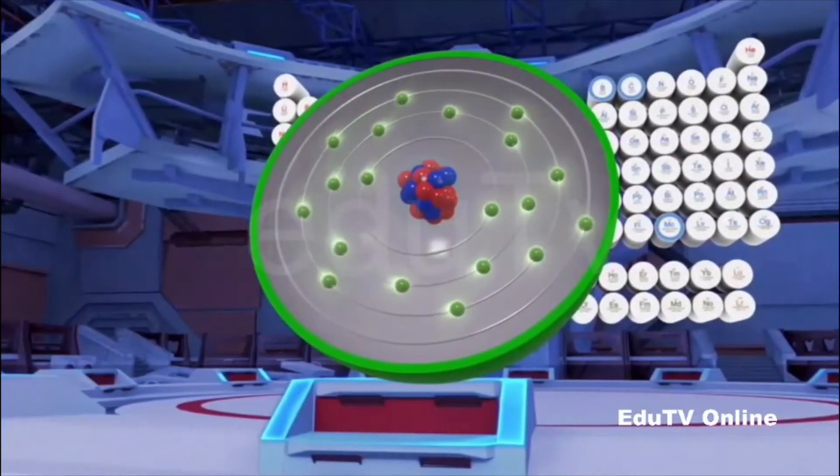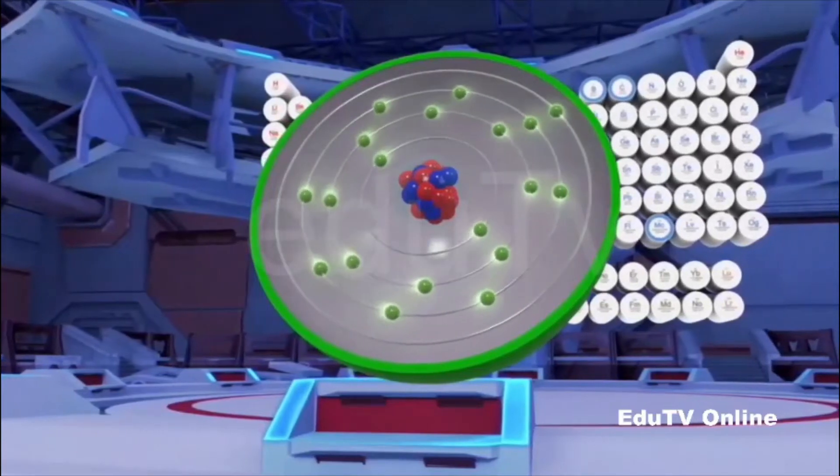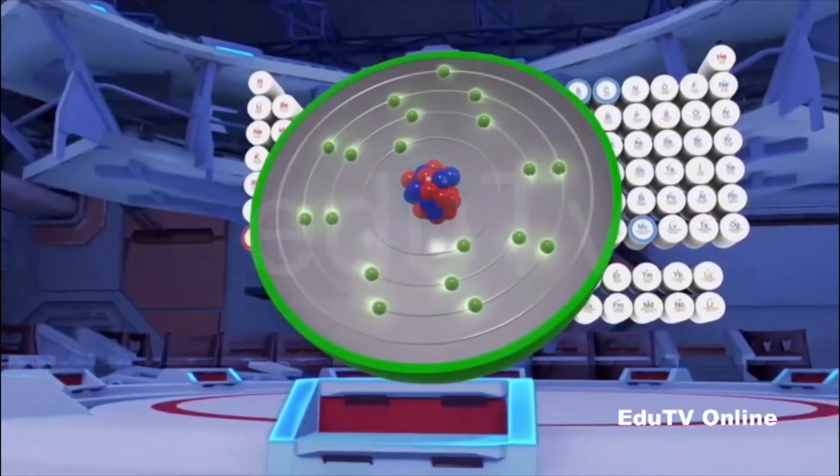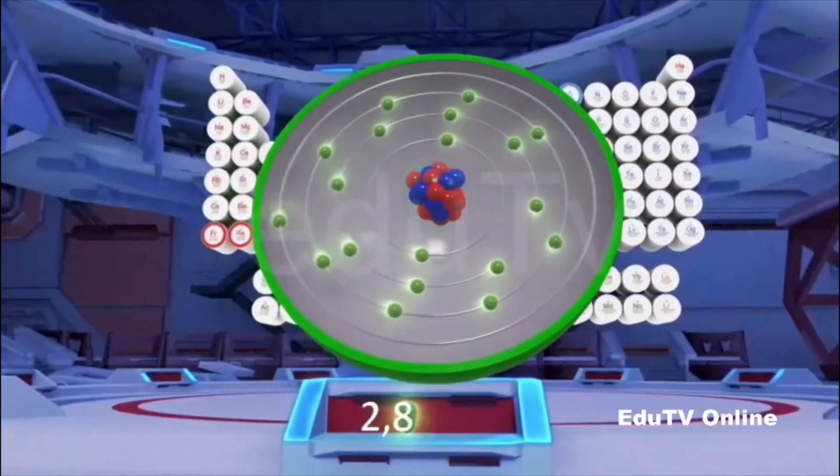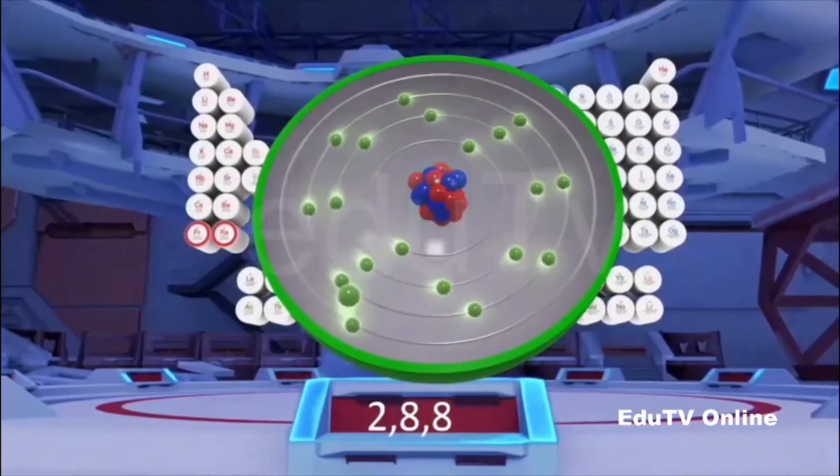Hence, the electronic configuration of potassium is written as 2, 8, 8, 1.